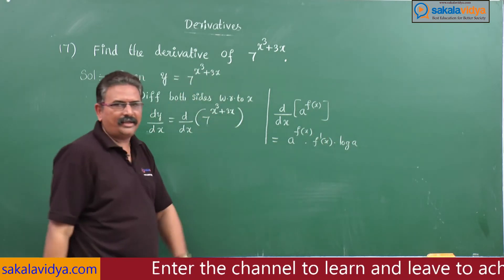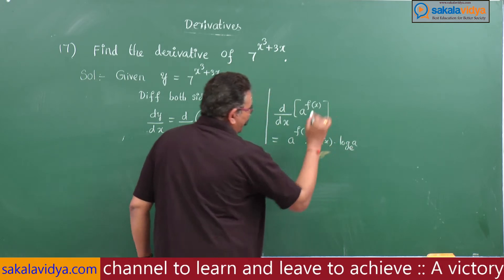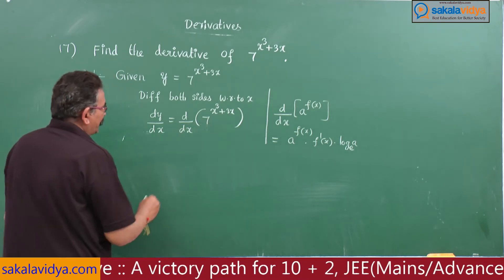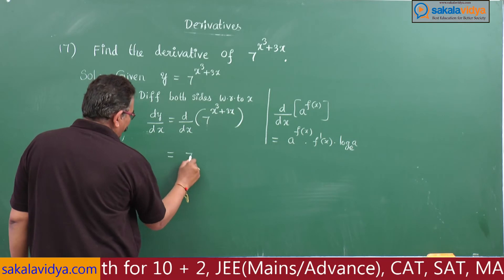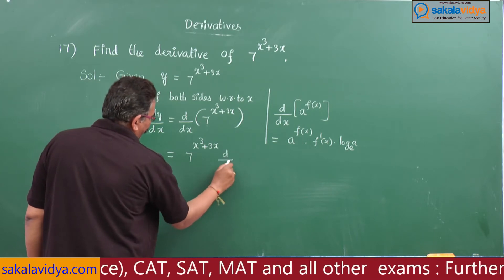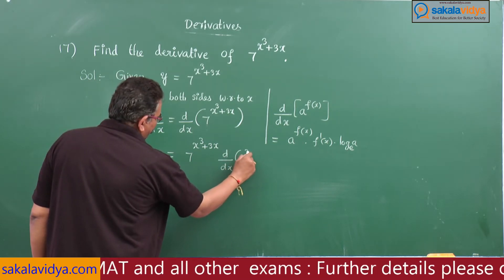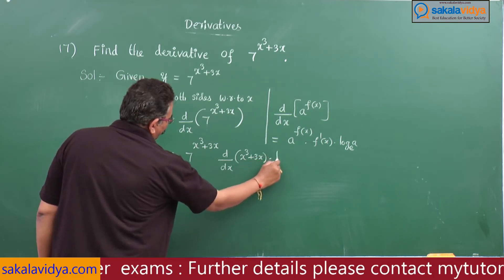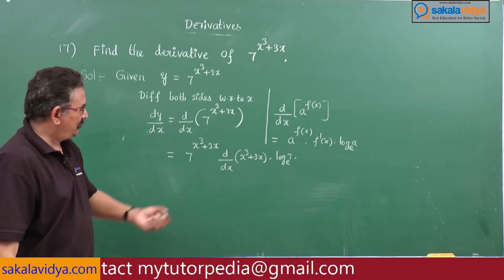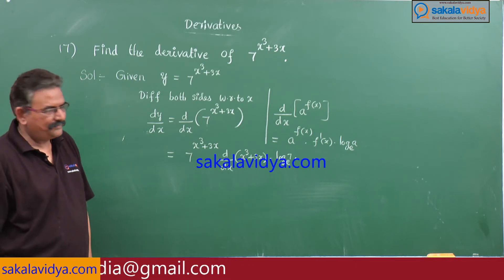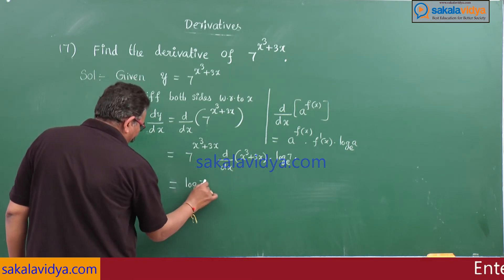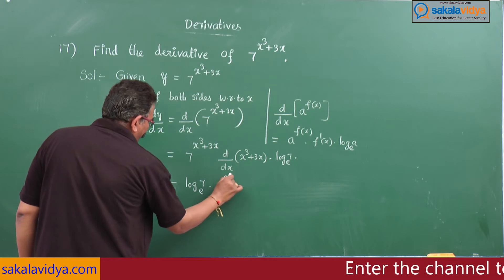This equals a^f(x) into the derivative of f(x), that is f'(x), into log a to the base e — you can write it like this. Using this formula we can easily write the derivative of the right hand side. This equals 7 to the power of x cube plus 3x, times d/dx of x cube plus 3x, into log 7 to the base e. Generally, a common mistake here is forgetting to write log 7 to the base e.